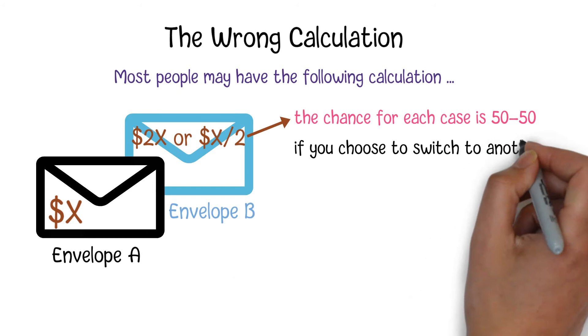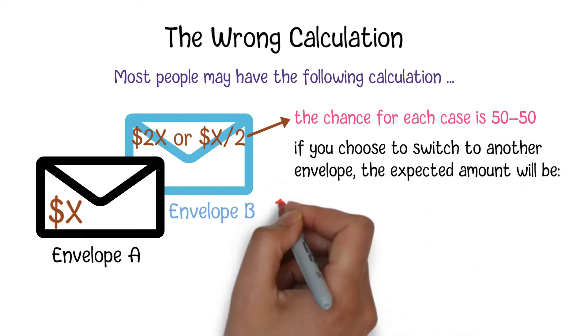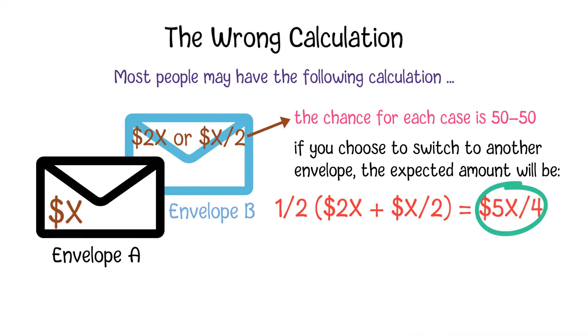So if you choose to switch to another envelope, the expected amount you will get is 5X/4. Since that amount is bigger than X, from the probability perspective you should swap the envelope. Now we have the paradox.